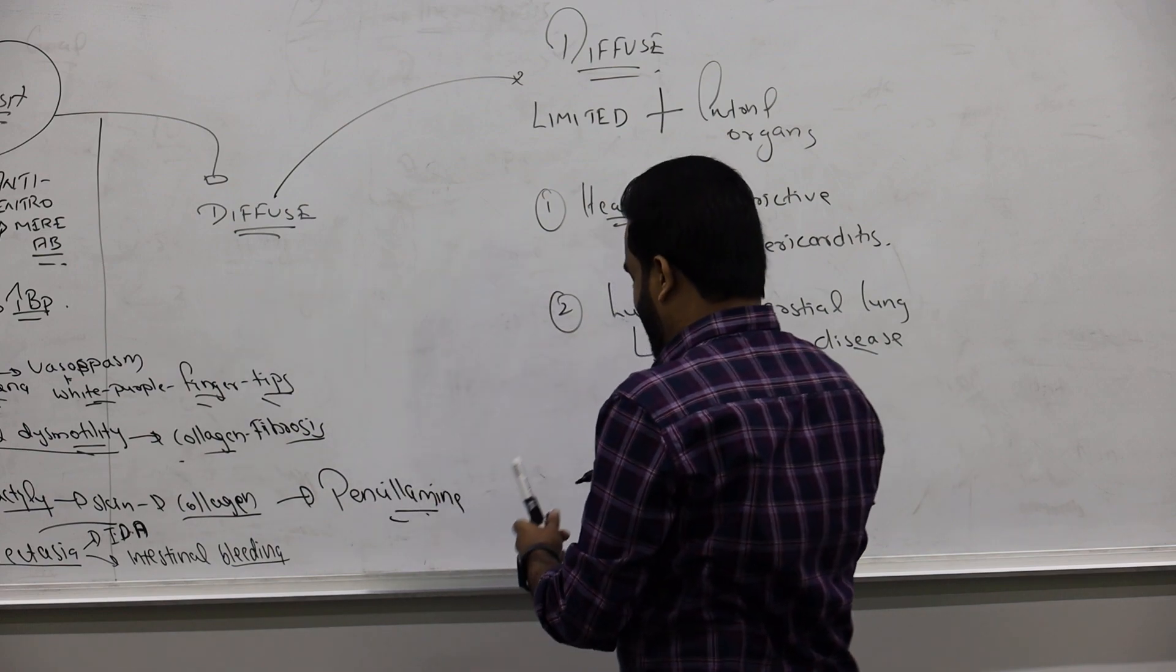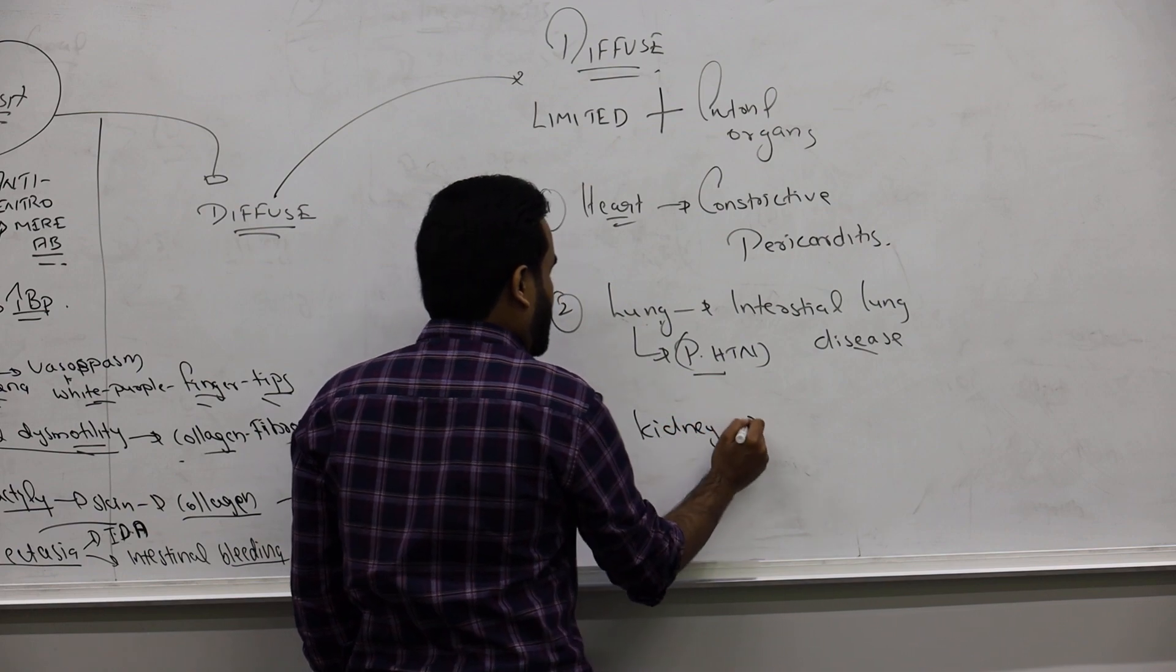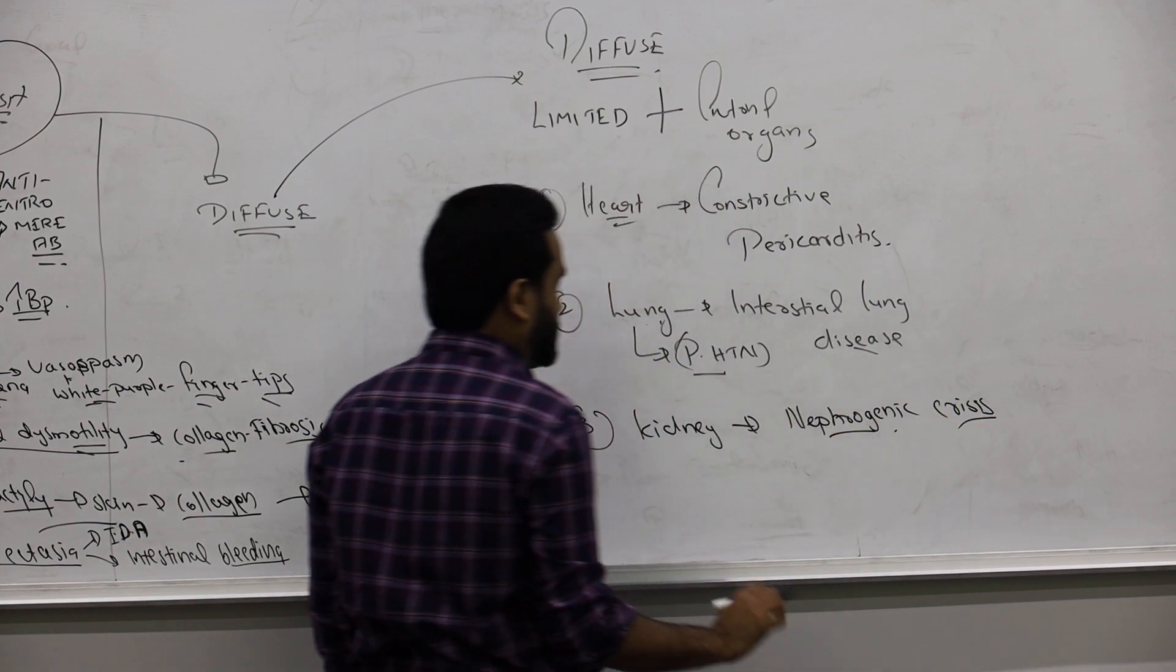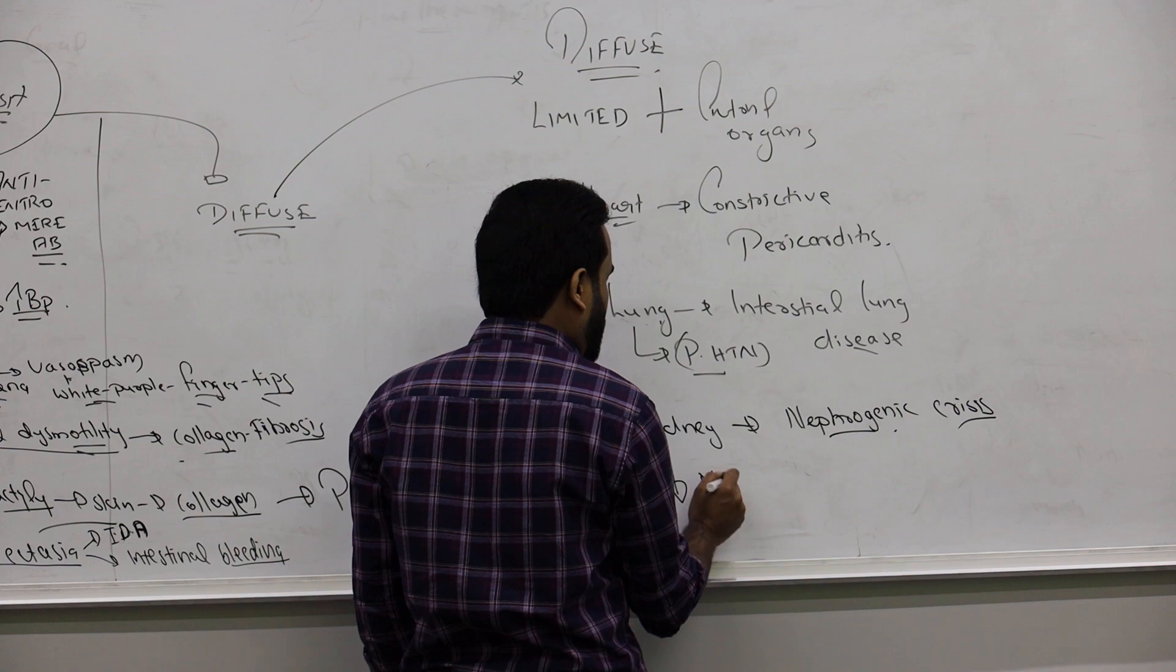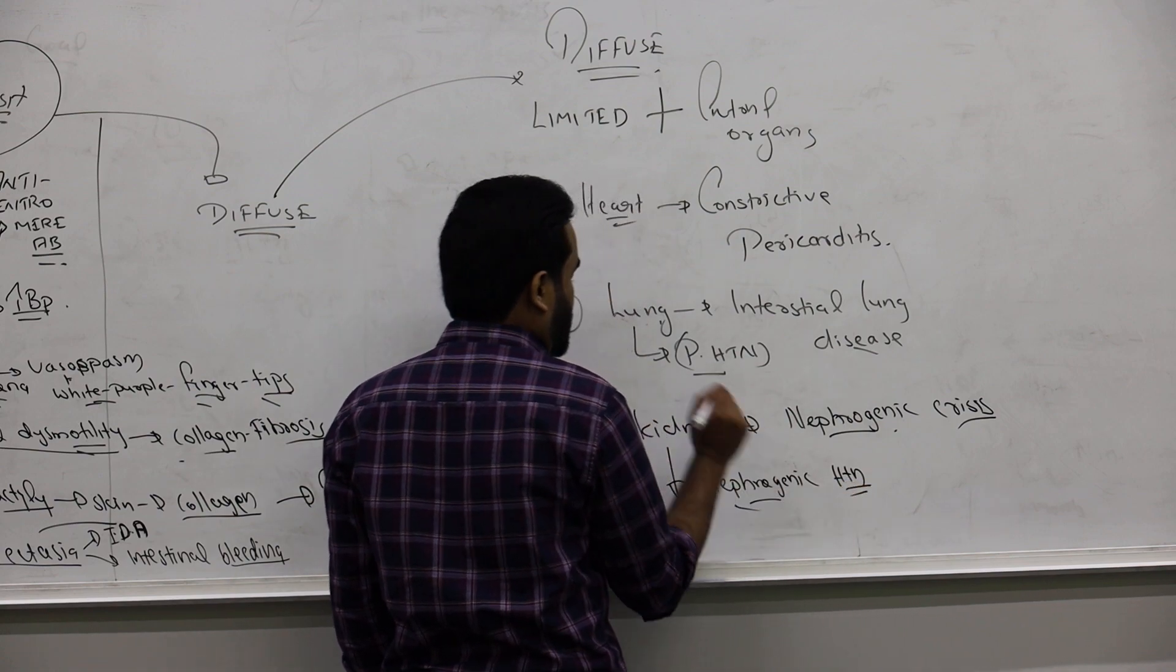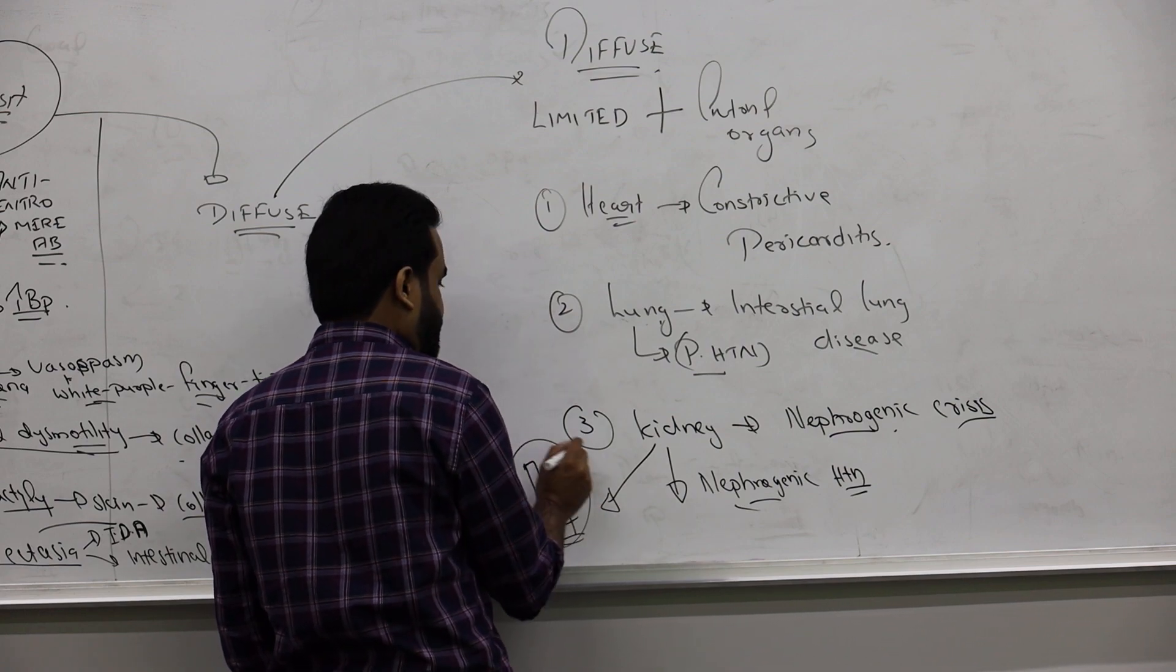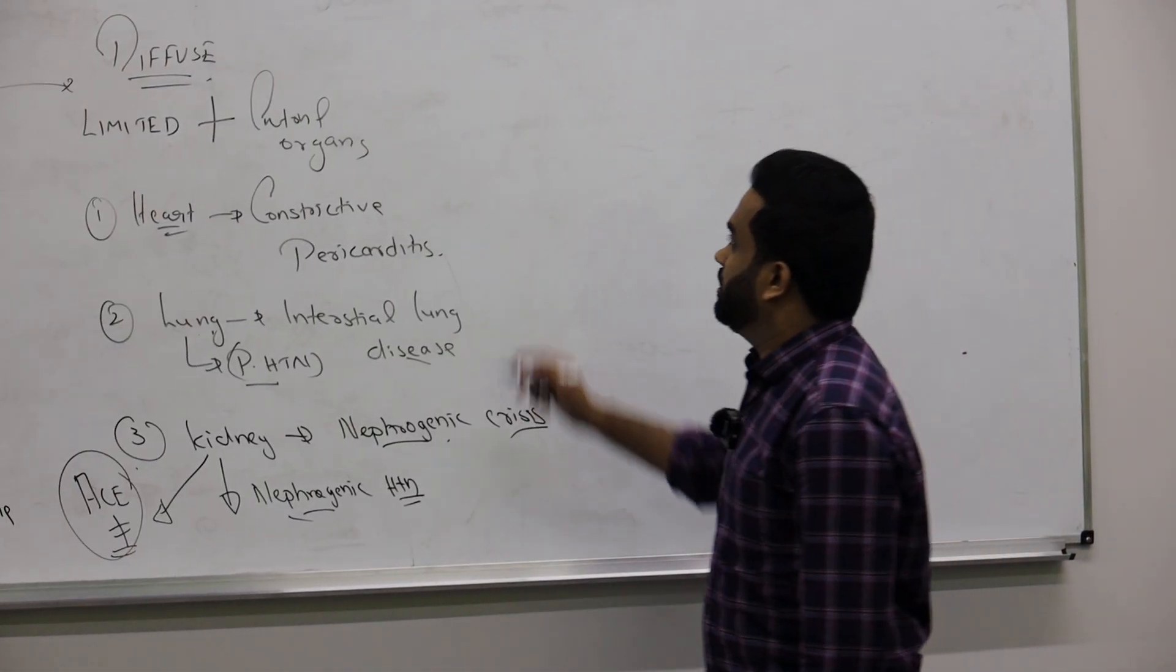Then you will have kidney affected - you will have nephrogenic crisis due to scleroderma. The kidney will be completely affected, so they will have nephrogenic hypertension. We have to give them ACE inhibitors to protect the kidney. Angiotensin converting enzyme inhibitor is the drug that saves the kidney.